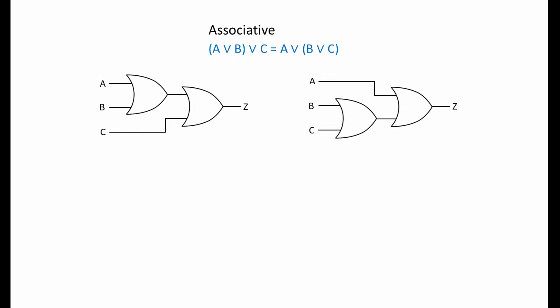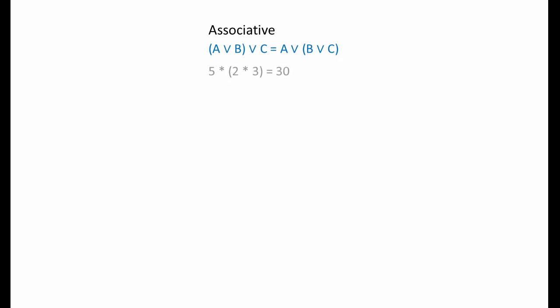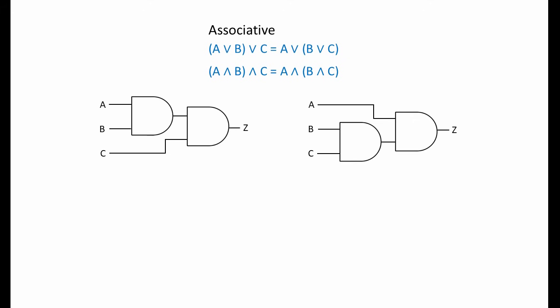In terms of logic gates, we're saying that these two subtly different circuits behave in exactly the same way. In a similar fashion, we know that 5 times 2 times 3 equals 30, and that (5 times 2) times 3 is also 30. Algebraically, A times B times C equals (A times B) times C. Because multiplication is like a Boolean AND operation, it follows that A AND B AND C equals (A AND B) AND C — the behaviours of these two gate combinations are identical.